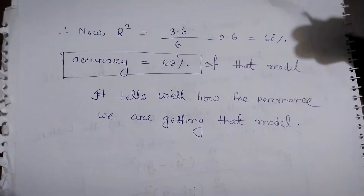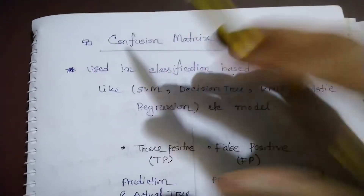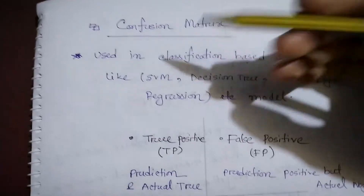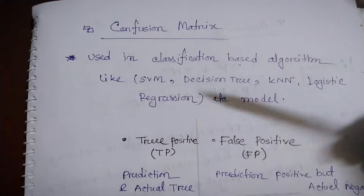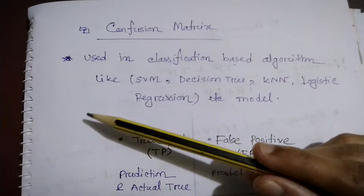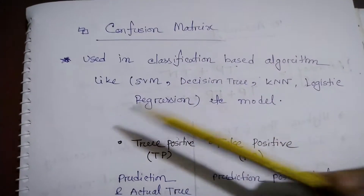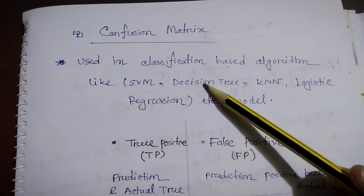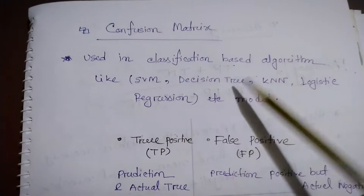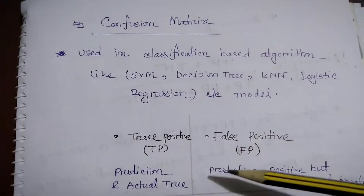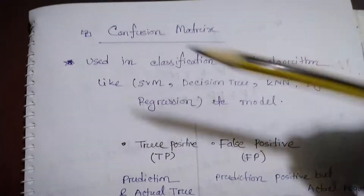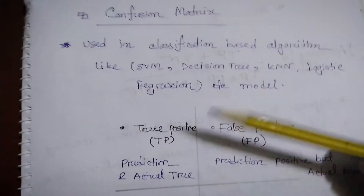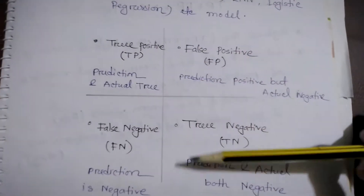Now, the confusion matrix is also very important when analyzing the performance of classification algorithms. Classification algorithms include SVM (Support Vector Machine), Decision Tree, KNN, Logistic Regression, and Naive Bayes. We use the confusion matrix to find accuracy for these classification models.